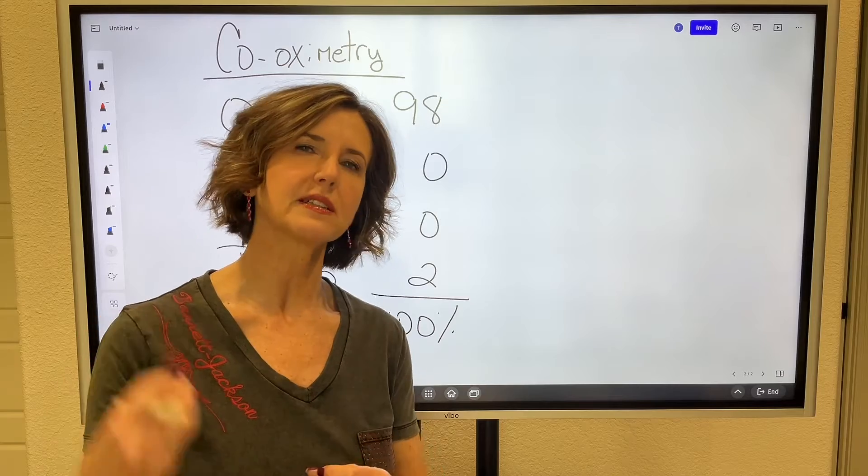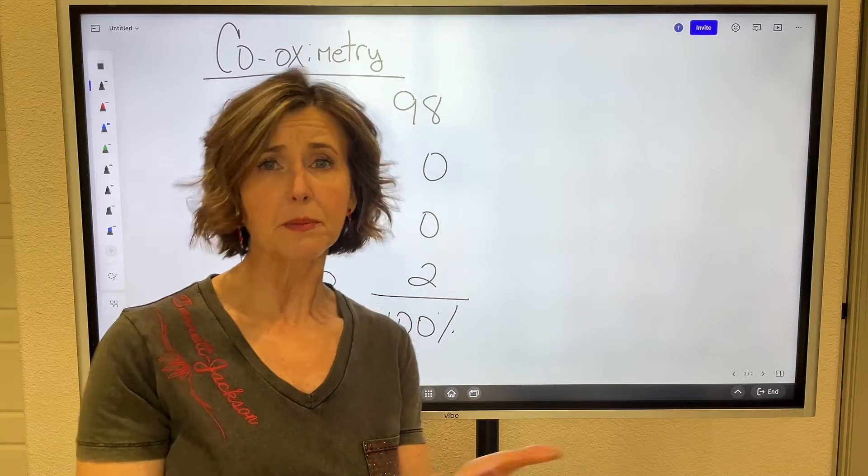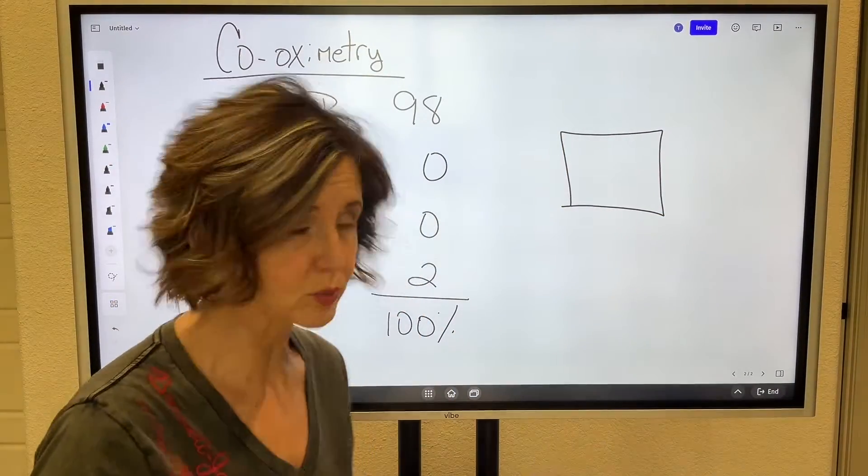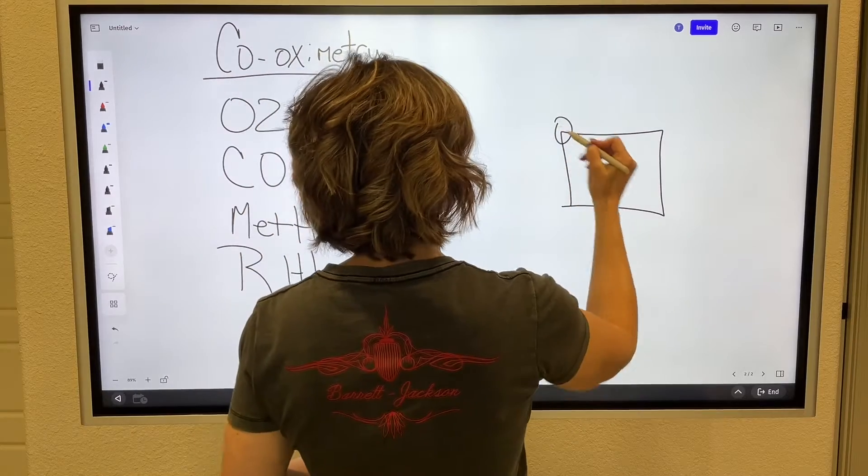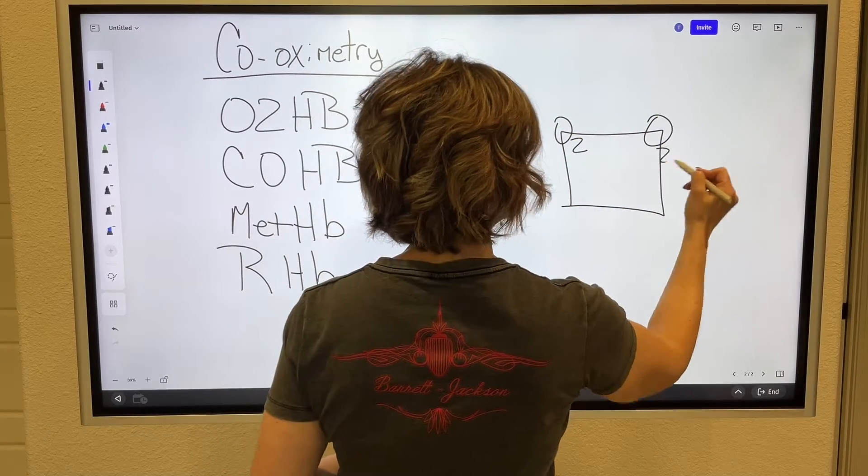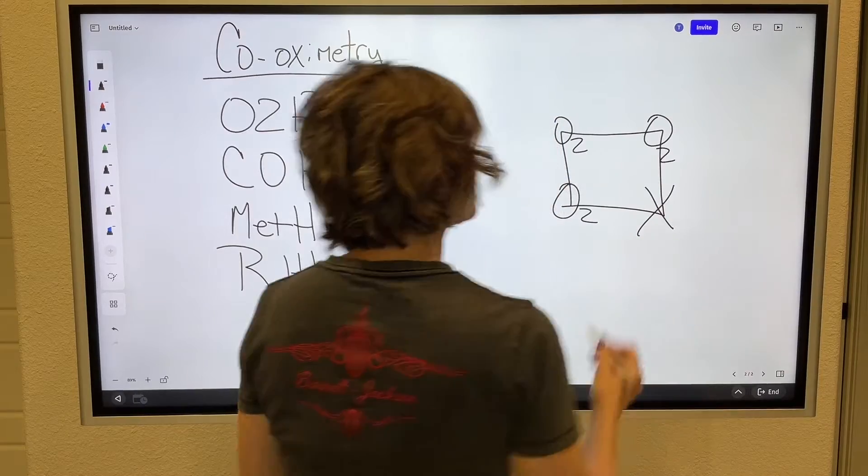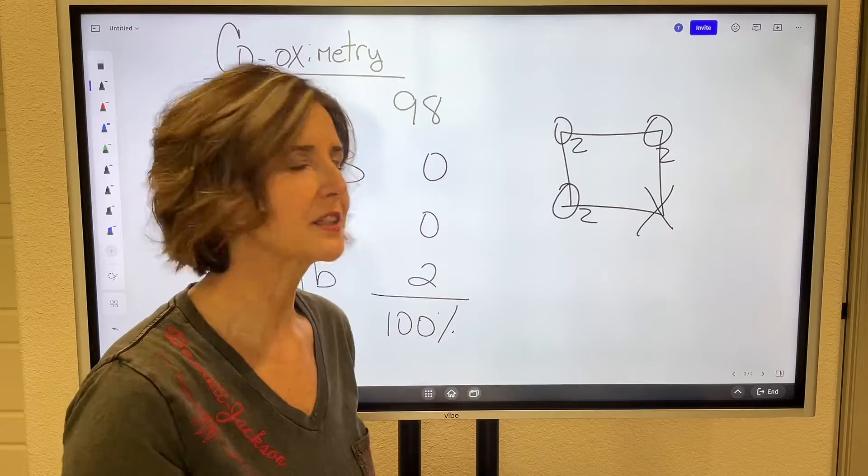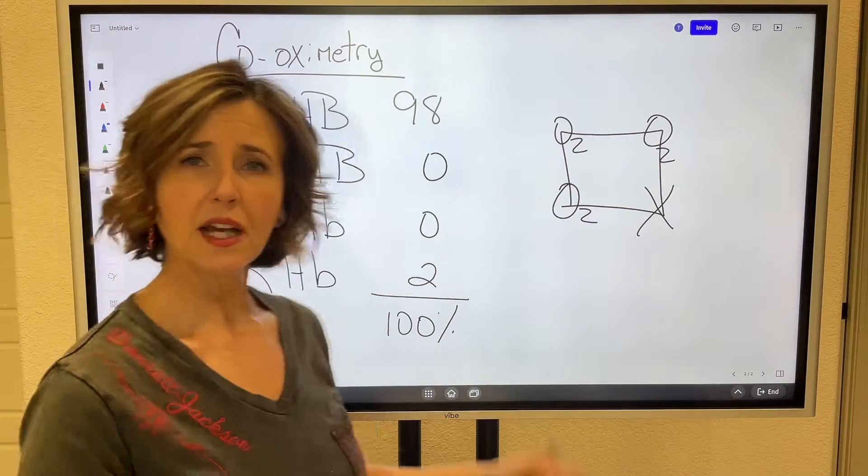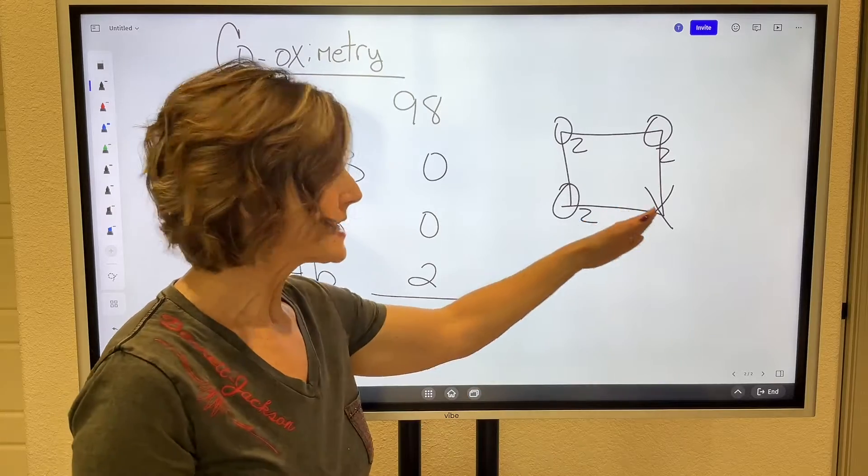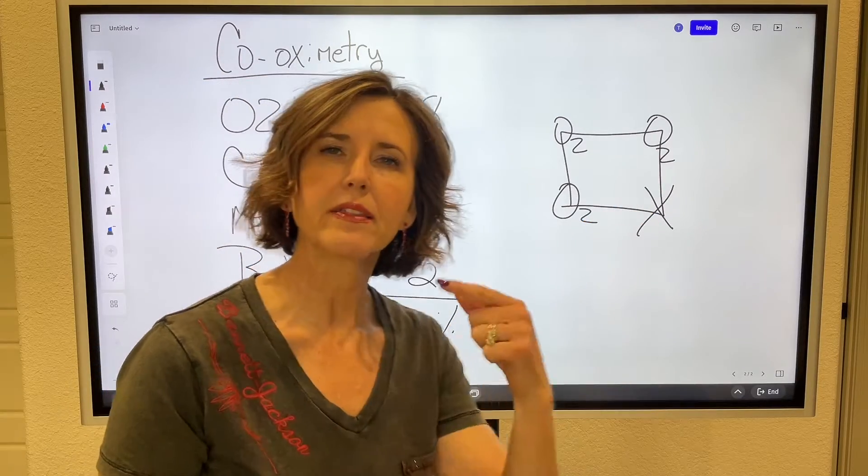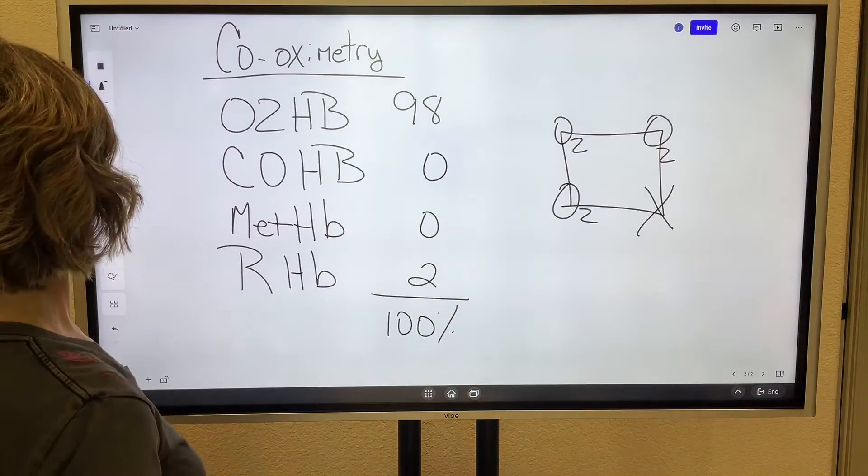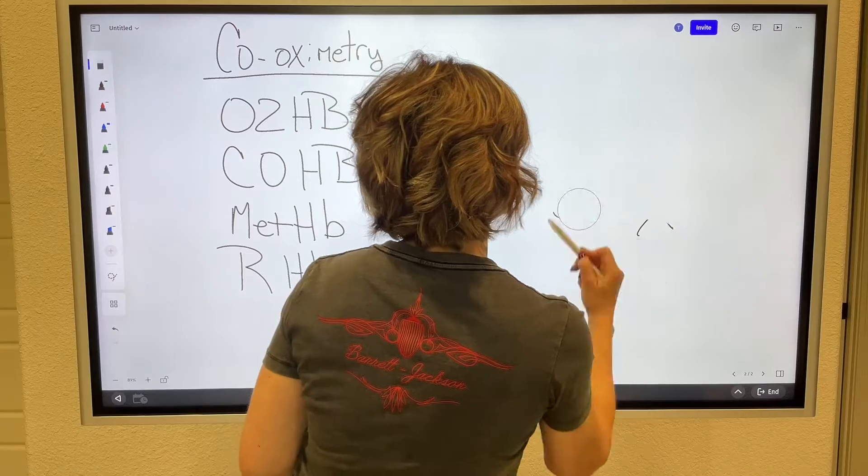People have a hard time really saying what reduced hemoglobin is. So let me explain this. If we have a hemoglobin molecule, this hemoglobin molecule has four places for oxygen to attach. But do you see how right there on that placement, there's nothing on it? That's why there's an X. Oxygen's not on it. Carbon monoxide's not on it. We don't have methemoglobin. Nothing is on it. That is reduced hemoglobin. Everybody has just a little bit of reduced hemoglobin. It's normal.